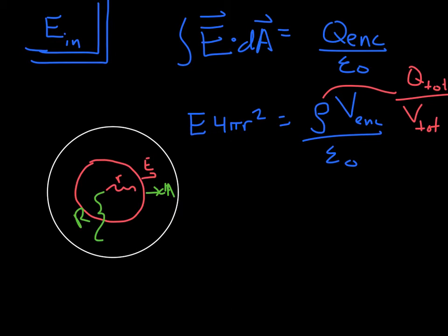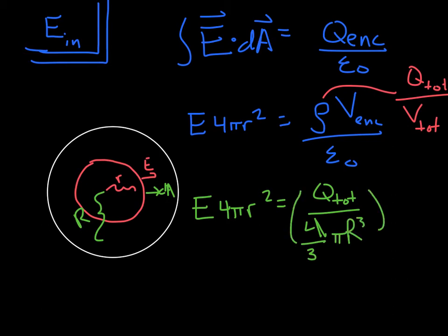So looking at this, let's plug in these numbers. You get E times 4 pi r squared equals, plugging that expression in for rho, q tot over v tot. I'm going to use the volume of a sphere. So 4 thirds pi big R cubed times your v enclosed, which is 4 thirds pi little r cubed. Little r cubed because you're only going out to here. All over epsilon naught.